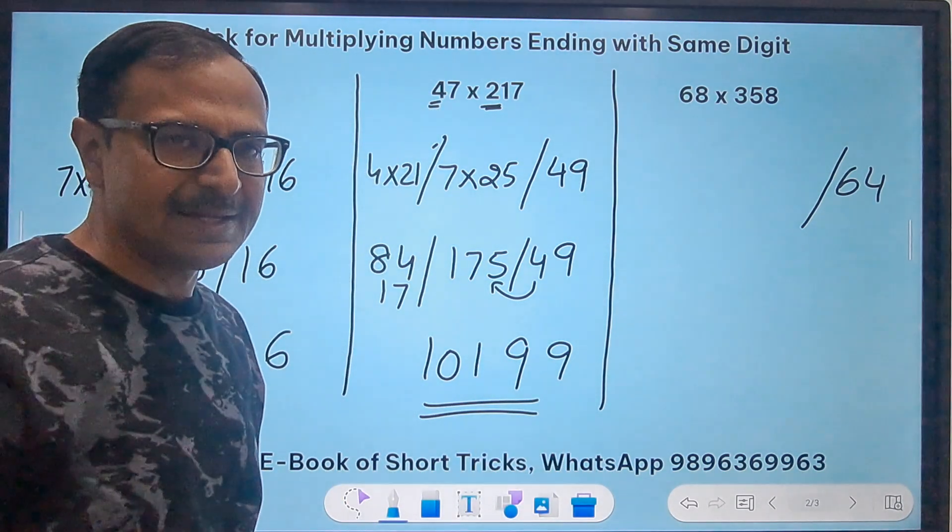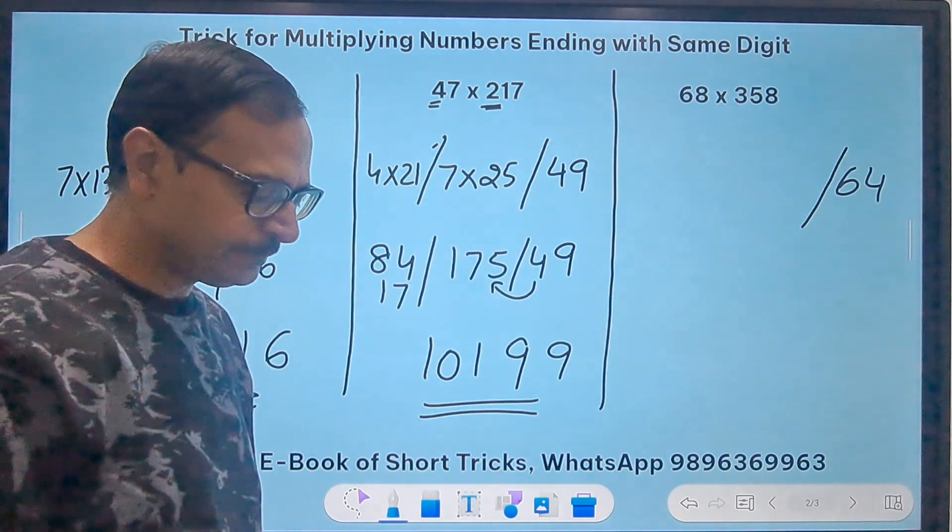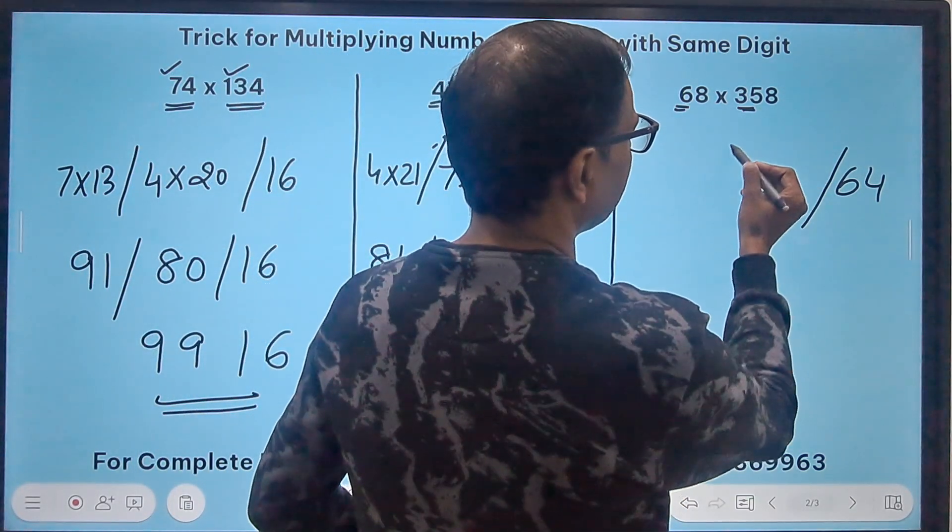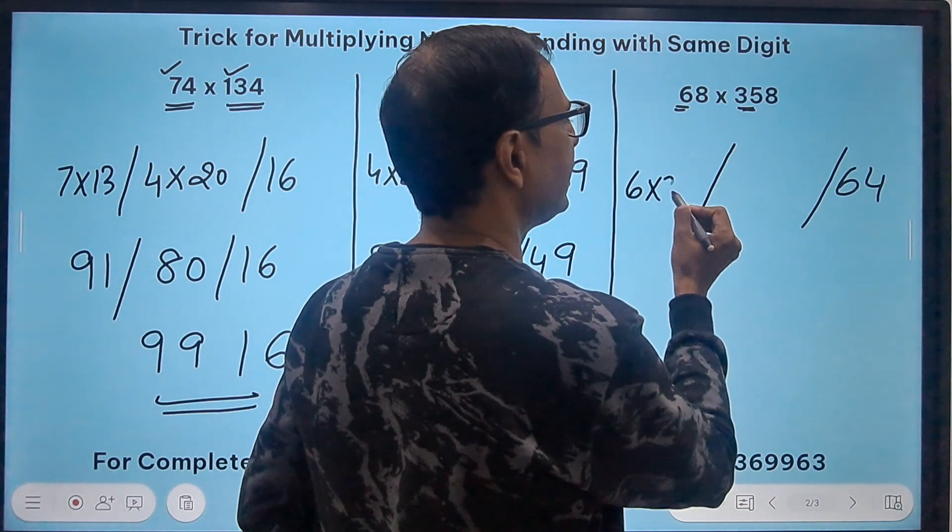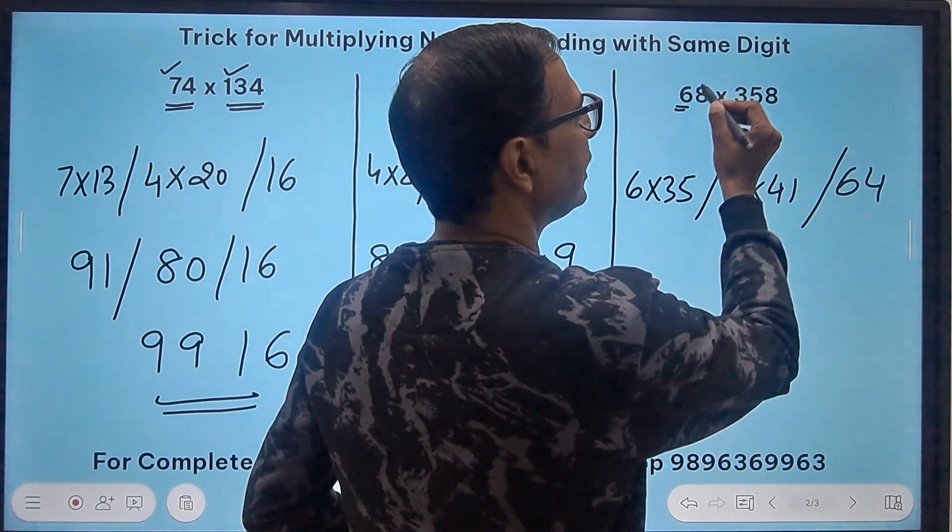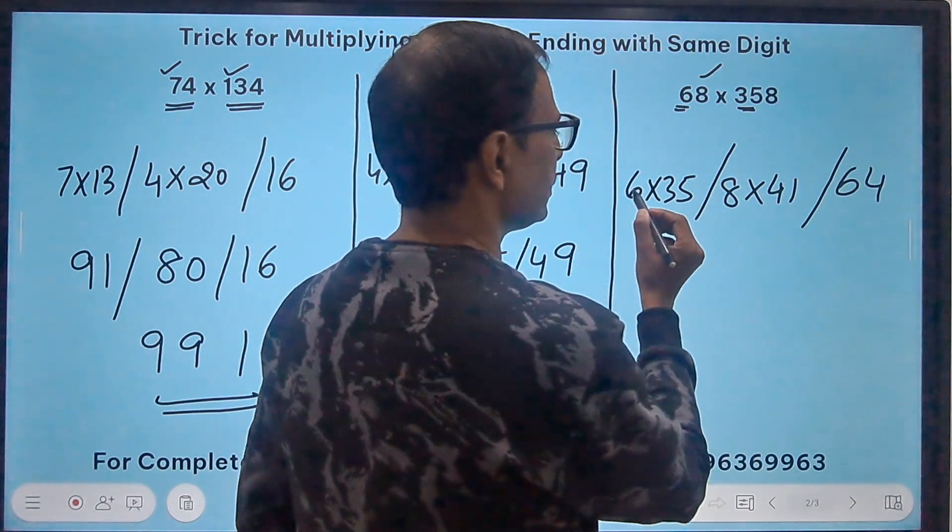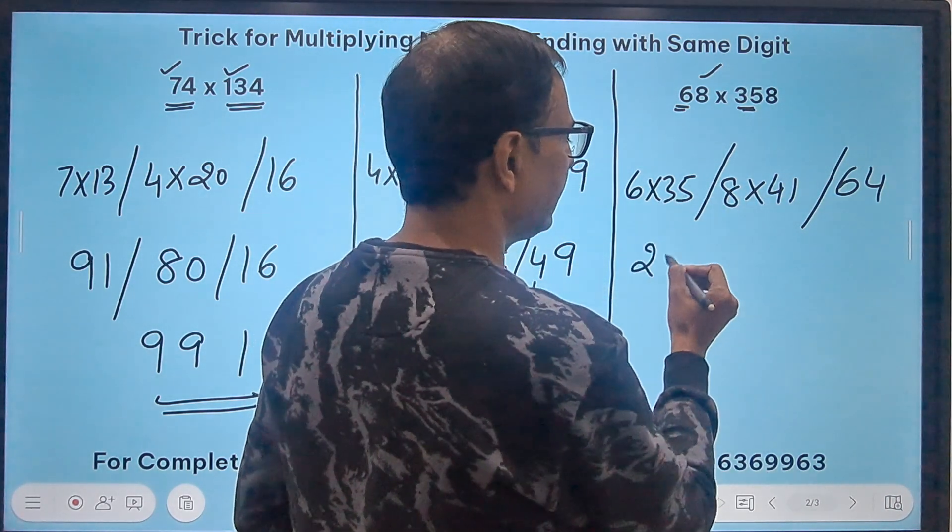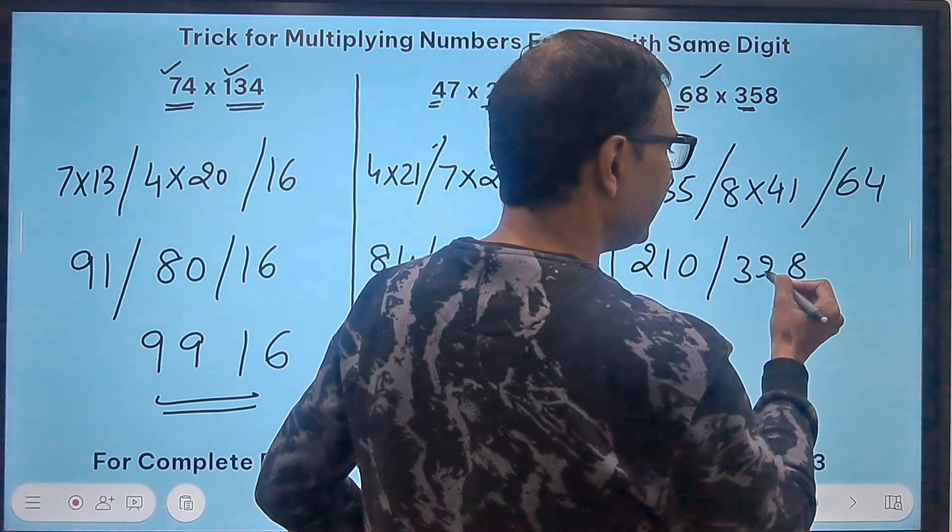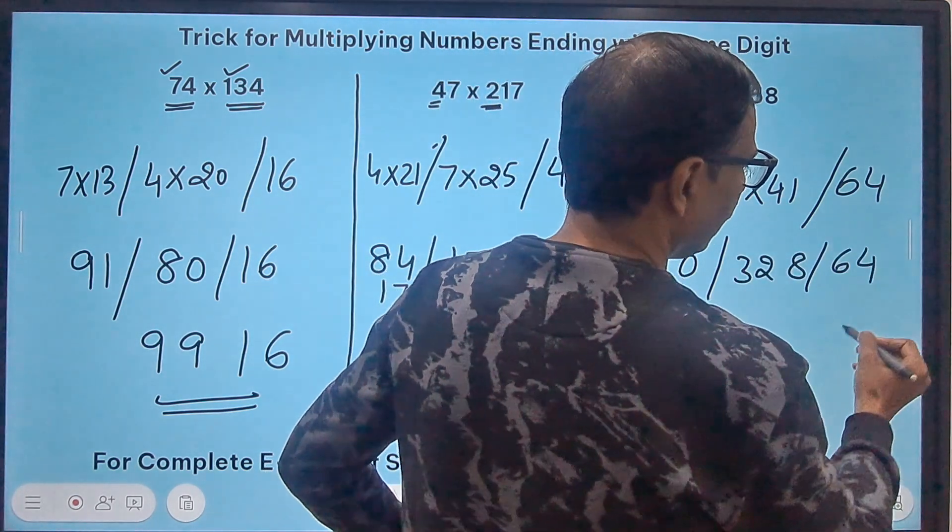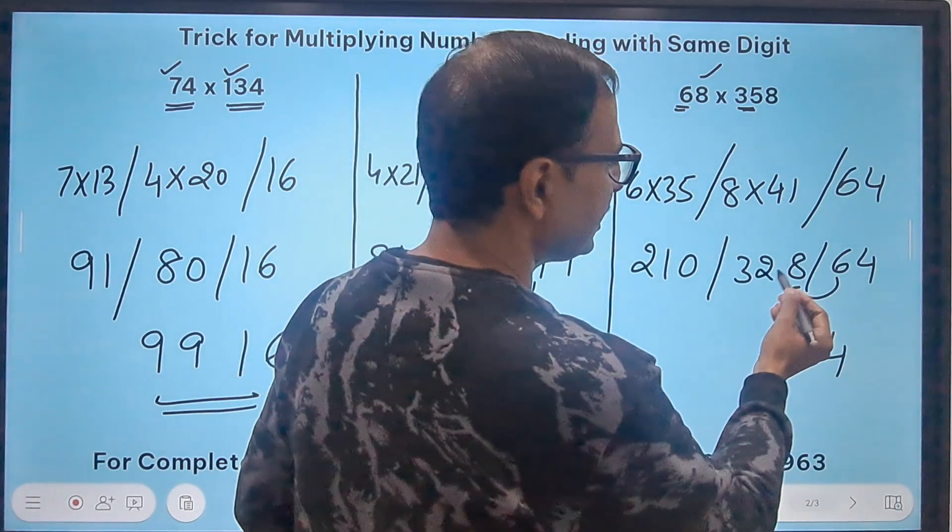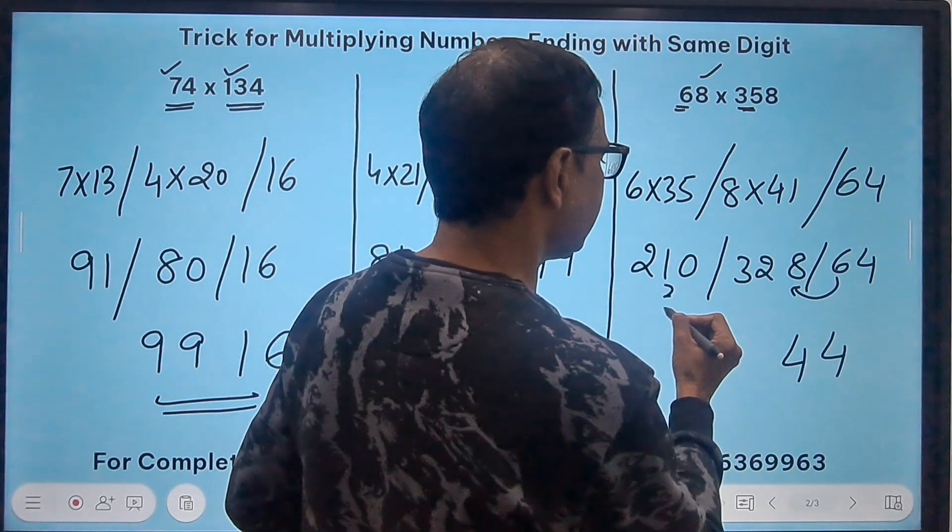Likewise here you have 6 and 35 so in the first place I will do 6 into 35 and then if you add them you get 41 and multiply that by the unit digit 8. So this is 210 easy, and then this is 8 and 32 again easy and then 64. So 4, the 6 added to 328 gives me 334, so 4 and 33 carrying, so 243, so 24344 is the product of 68 and 358.